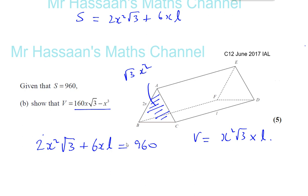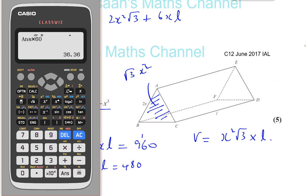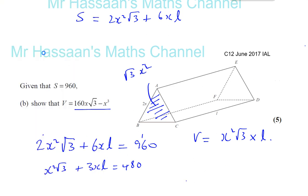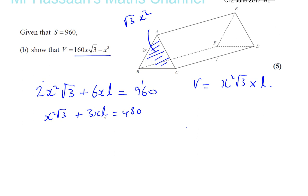So let's start off by dividing everything by 2 here to make things a bit simpler. All of these numbers can be divided by 2, so you're going to have x squared times root 3 plus 3xl equals a half of 960, that's going to be 480. So now we have to make l the subject of this formula. So first of all, let's get rid of this, so we have 3xl is equal to 480 minus x squared times root 3. And then l is equal to 480 minus x squared times root 3 over 3x.